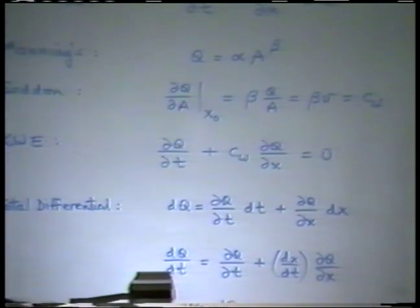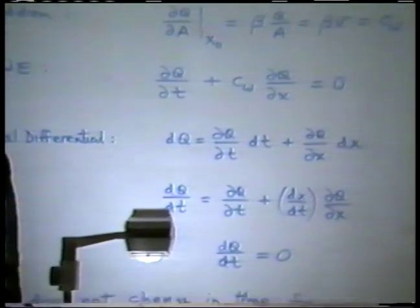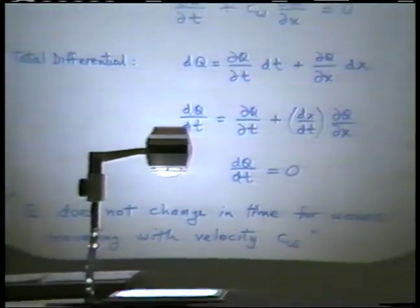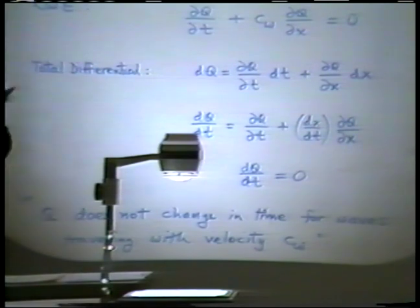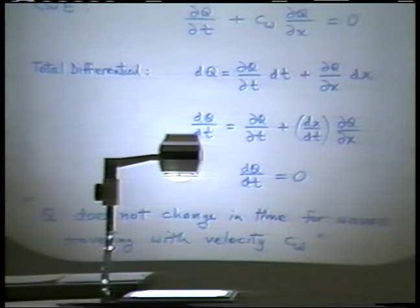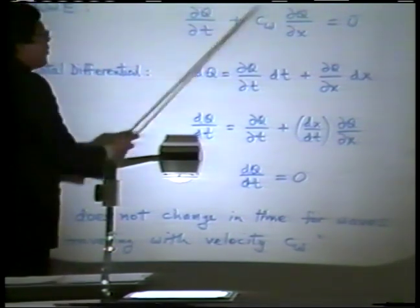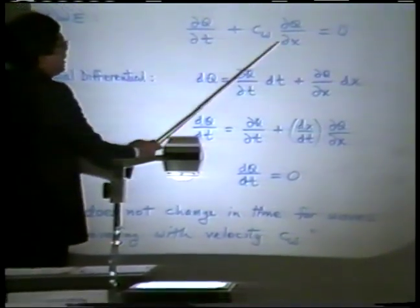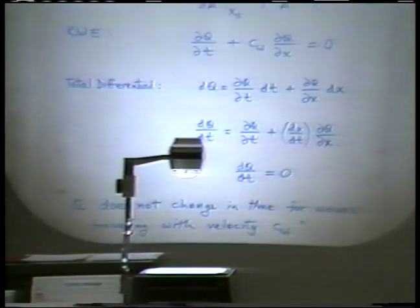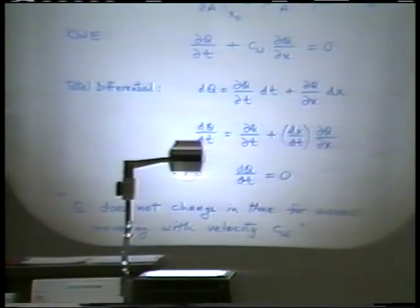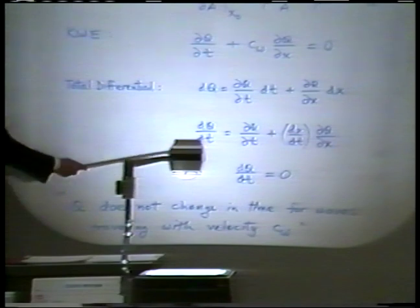Since dQ/dt is zero, Q does not change in time for waves traveling with velocity C sub W. We conclude from this mathematics that the kinematic wave is a first-order equation. It has no second-order terms. By virtue of being a first-order equation, it depicts the translation of a wave. And because it translates, it is a wave that does not change its concentration — its discharge does not change in time.